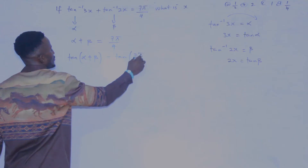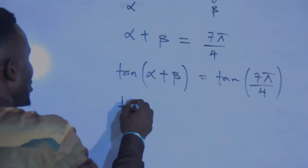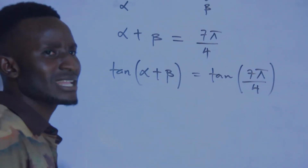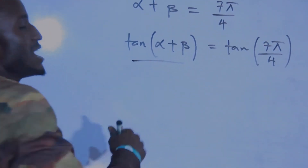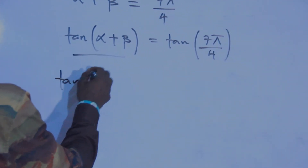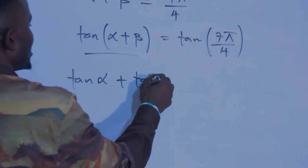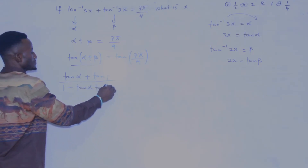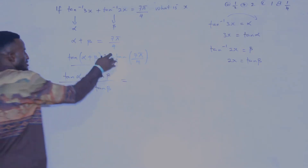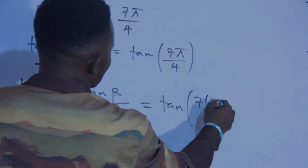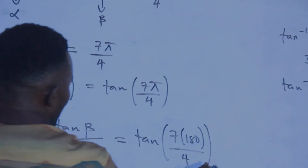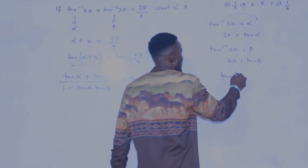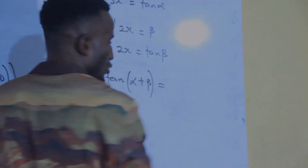Now this becomes tan(alpha plus beta). Don't forget that the expansion of tan(alpha plus beta) in trigonometry is equal to tan alpha plus tan beta, all over one minus tan alpha times tan beta. So this equals tan of seven into brackets, 180 over four. I don't do any magic — that is the standard expansion.